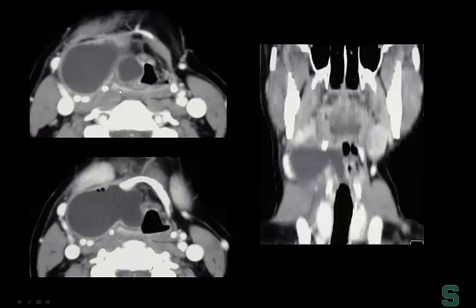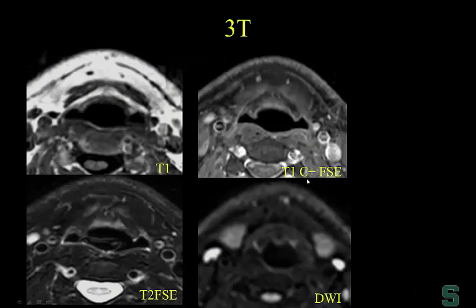Here's an example — a cystic lesion involving the larynx, extending out through the thyrohyoid membrane, very nicely seen on the coronal images, and extending out into the soft tissues of the neck. This is a laryngocele. We'll have more to say about that.